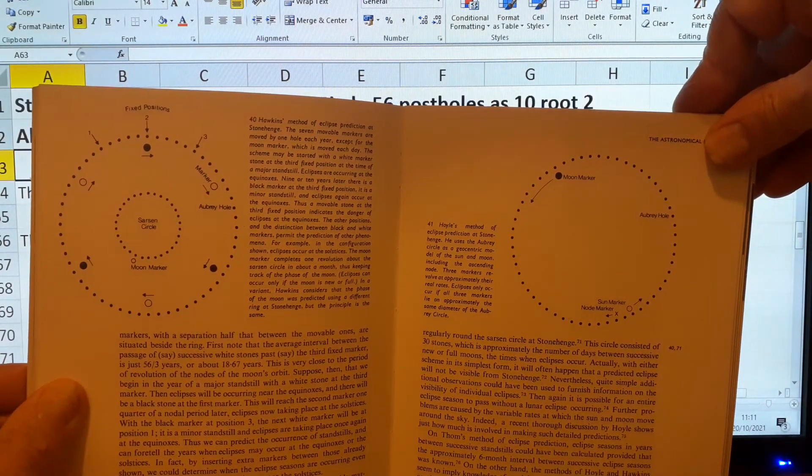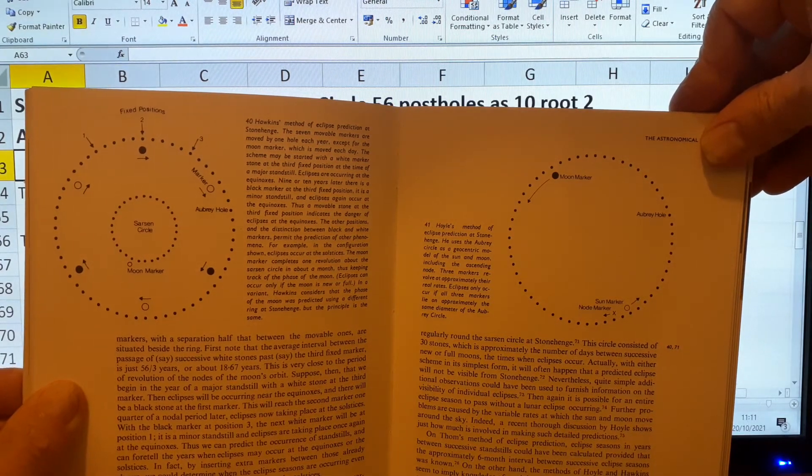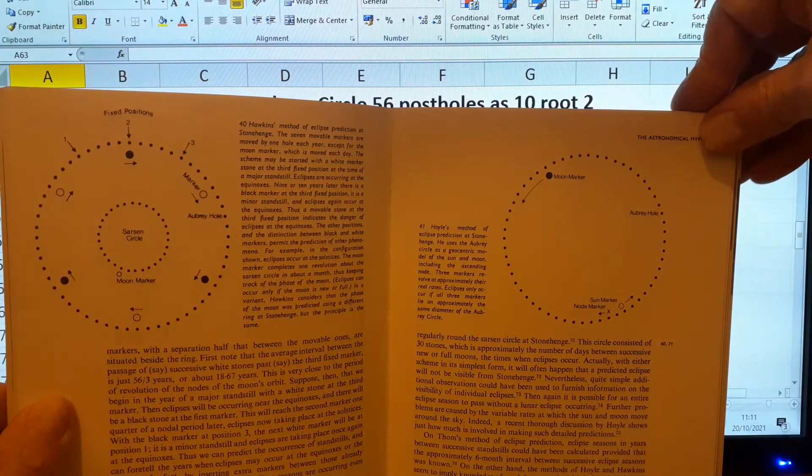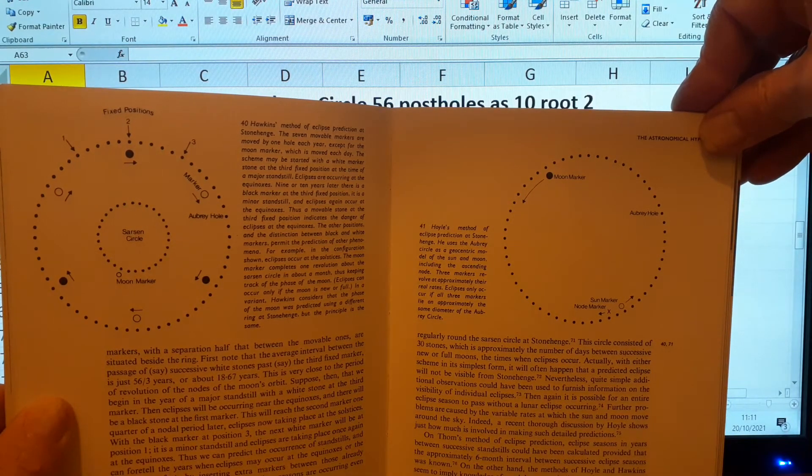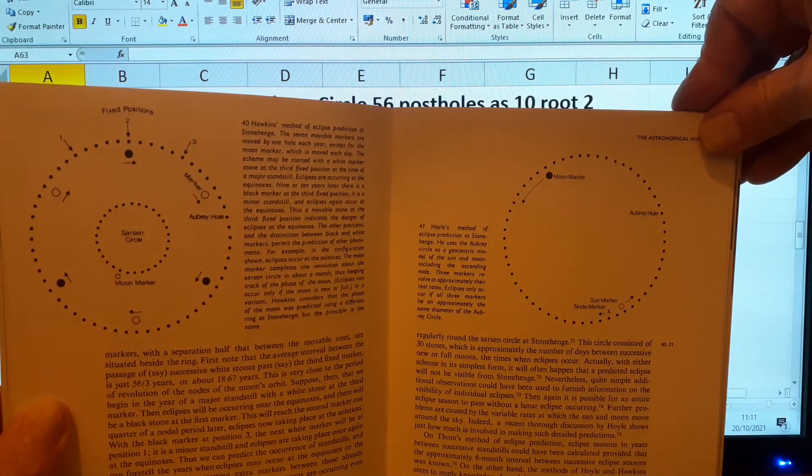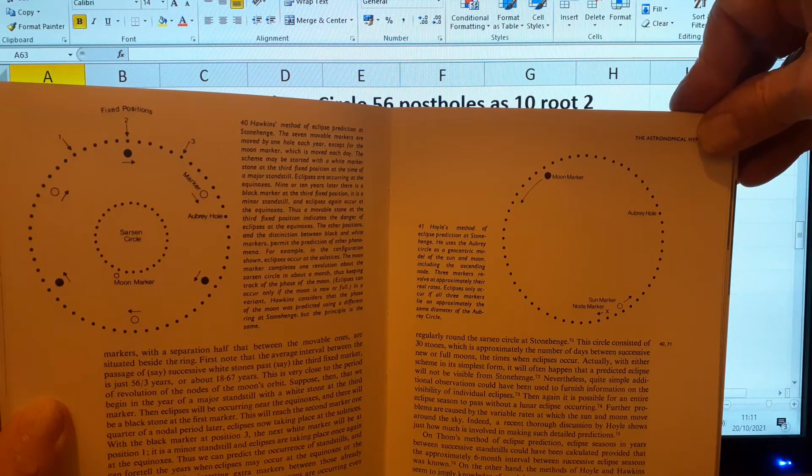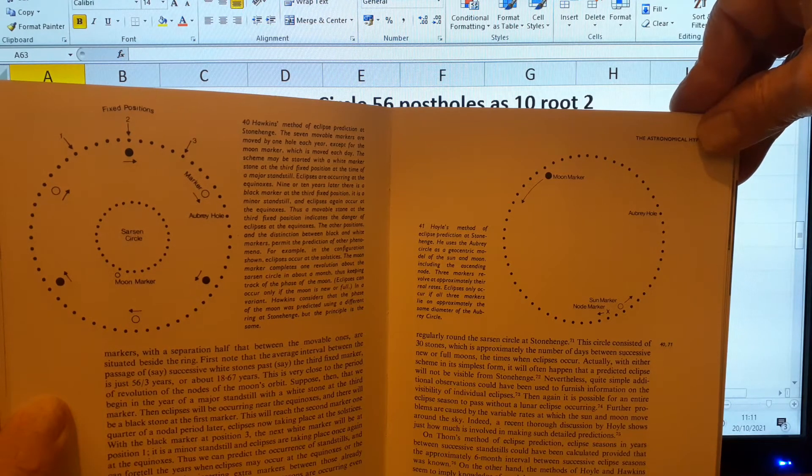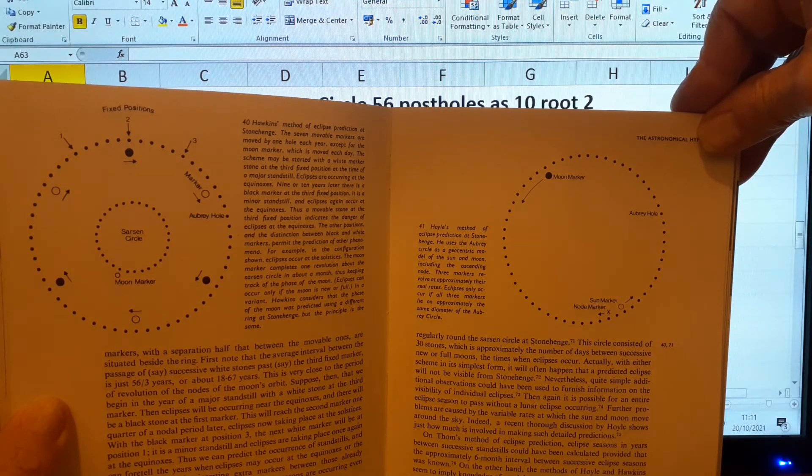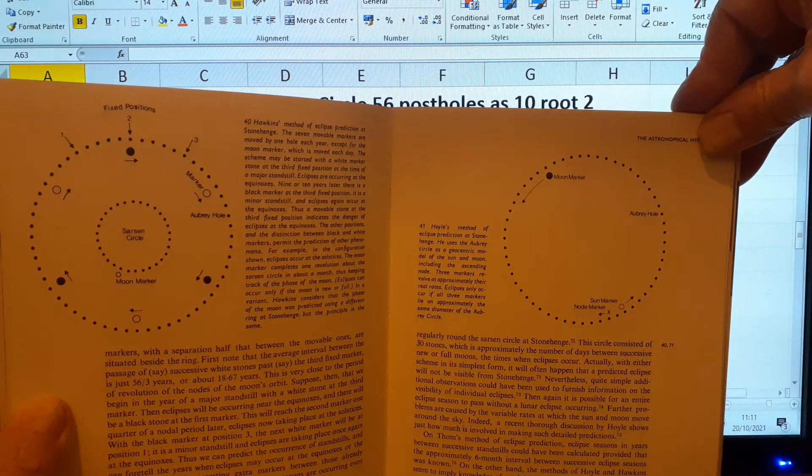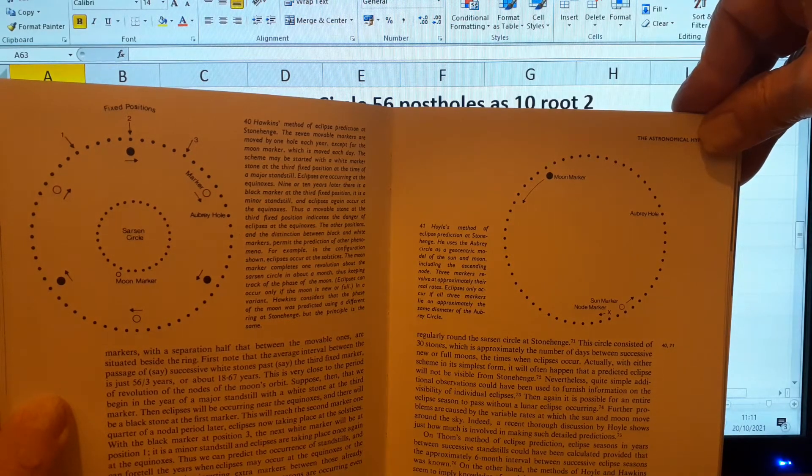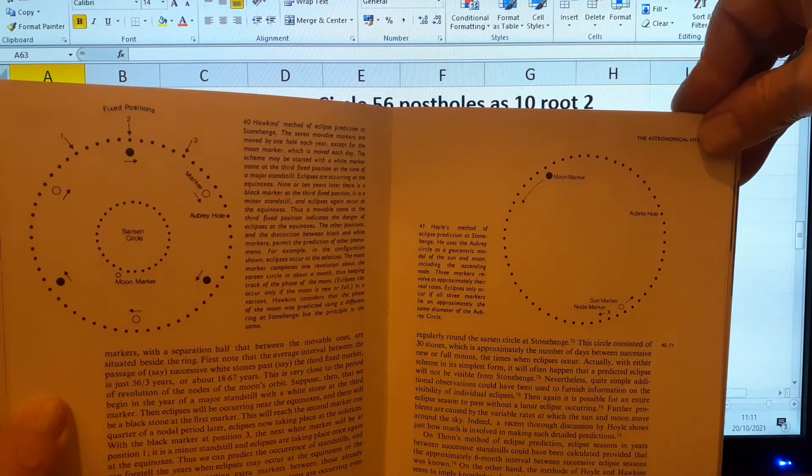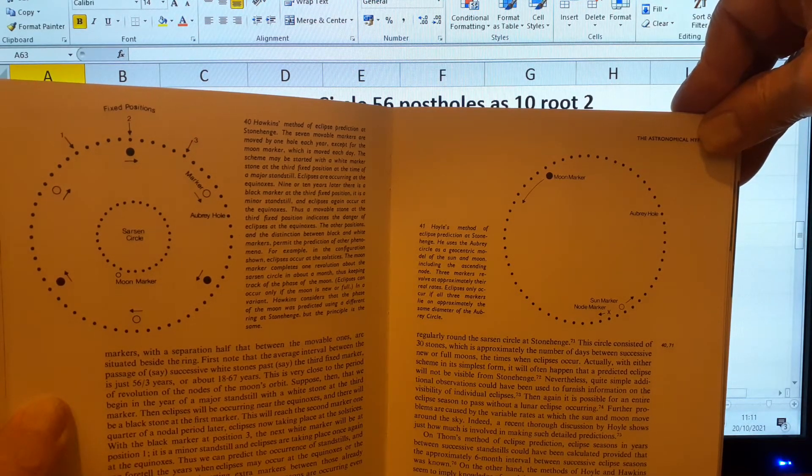He was suggesting that you can predict eclipses using 56 markers in a circle. Also Professor Fred Hoyle on the right-hand side, who was the Royal Astronomer, very famous man. He was showing a very simple method by using three markers of how you could predict eclipses. The markers revolve at approximately their real rates, so that's something really special.